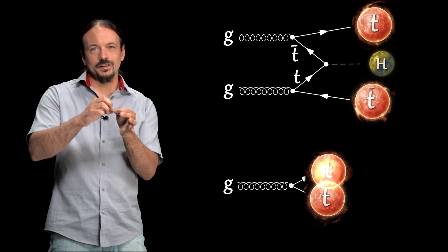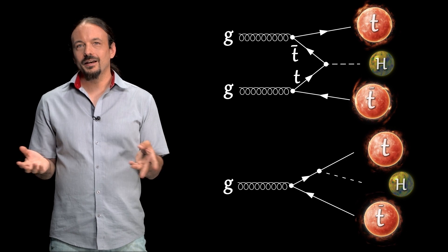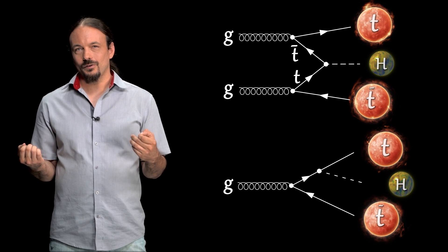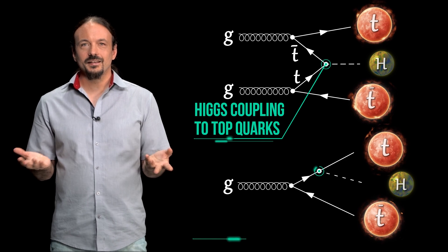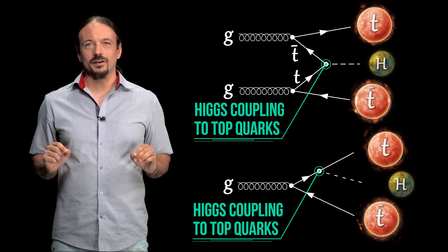In both cases, we end up with a Higgs and two top quarks. And in both cases, the Higgs was produced from the top. So, looking at this final state, we're actually directly probing the coupling of the Higgs to the top quark.